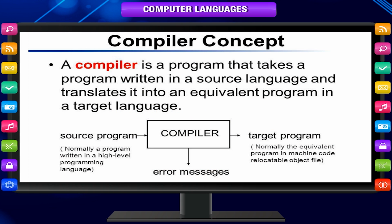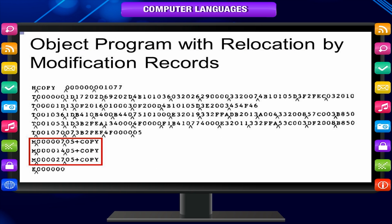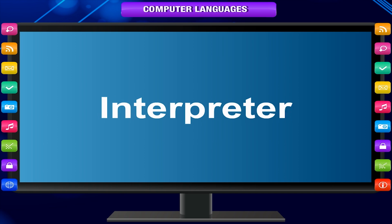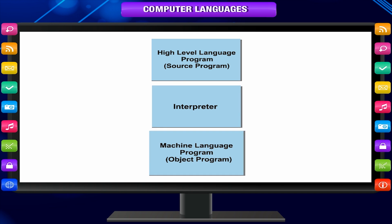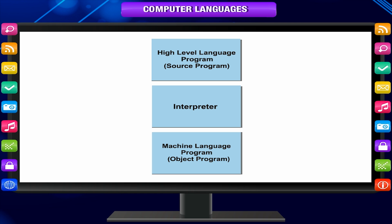Compiler: a compiler translates a program written in high-level language to an executable machine language program, that is the object program. The object program is generated and executed to get the desired result. Interpreter: some high-level languages use interpreters to translate programs. Using an interpreter, one instruction in the program is translated and executed, then the next instruction is translated and executed — this way each instruction is translated and executed one by one in turn.